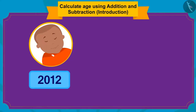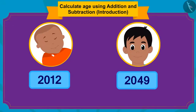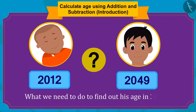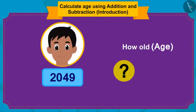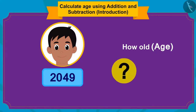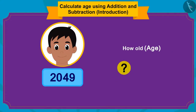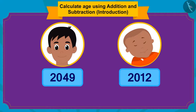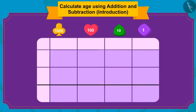Raju was born in 2012, and now they were in the year 2049. So, what do we have to do to find out his age in 2049? It's very easy. Whenever we have to find the future age of a person — how much will it be in a certain year — we only have to subtract the year of his birth from the future year. What future year is here? 2049.